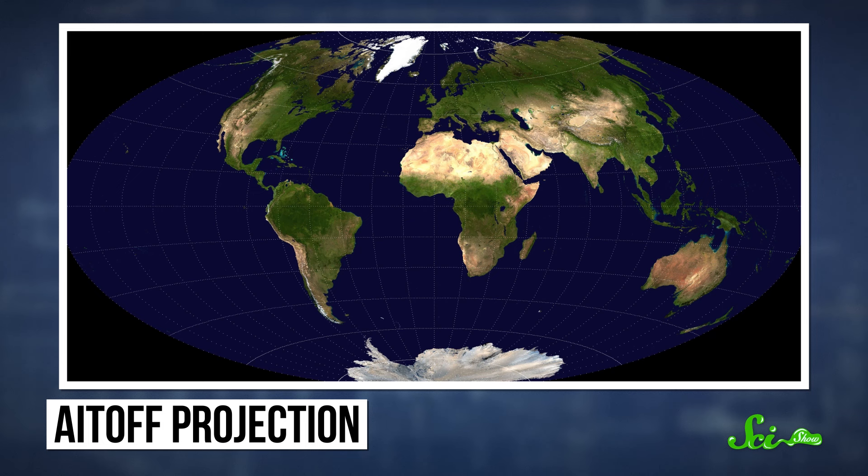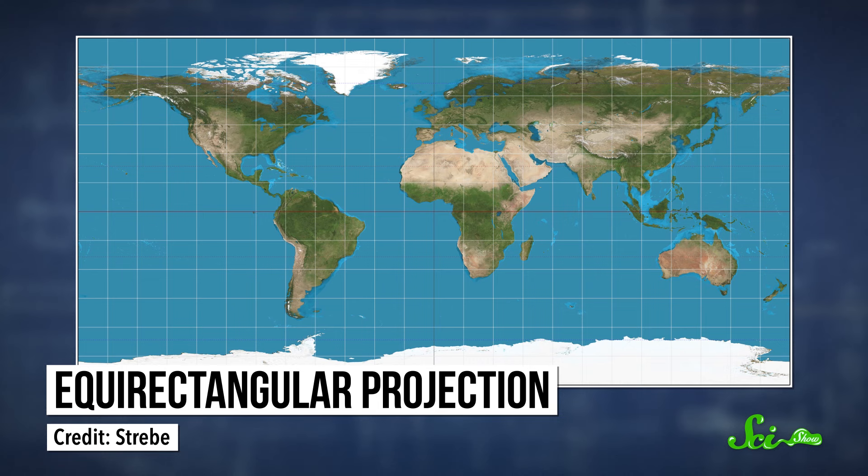One was the Aitoff projection, which tries to minimize distortion by bending the latitude and longitude lines, turning the world into a big, curvy oval. The other was the equirectangular projection, which keeps the latitude and longitude lines very straight, and spaced out evenly so the world becomes a rectangle.